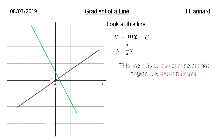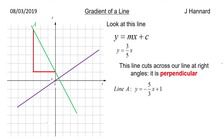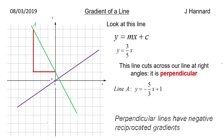Something similar can be said about perpendicular lines. We can work out the gradient of that, and that's minus 5 thirds of x. So what is the relationship between 3 fifths and minus 5 thirds? It's the negative reciprocal. A perpendicular line has the negative reciprocal of your original line's gradient, or the gradients are negative reciprocals of each other.